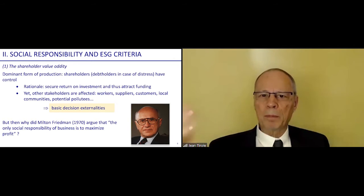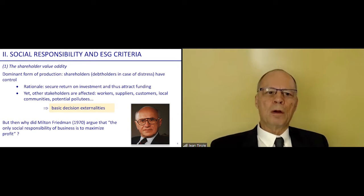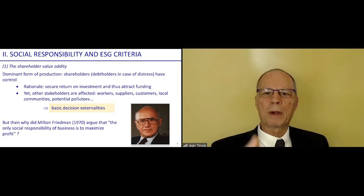One way of getting a return is to keep control over the management. That's correct. But at the same time, the stakeholders—the other people who have a stake in the firm—also are affected by the decision. You have in mind the workers, the suppliers, the communities where the firm is located, the pollutees if there is pollution and so on. There are what economists call basic decision externalities. The big question then is why do you get so many shareholder-owned corporations? And also Friedman's remark, the very famous remark, in which he says the only social responsibility of business is to maximize profit.